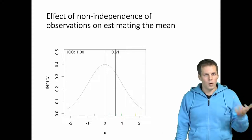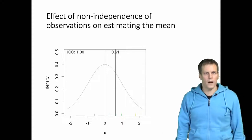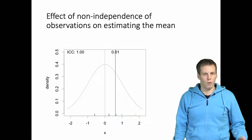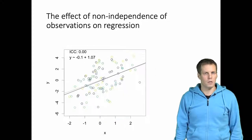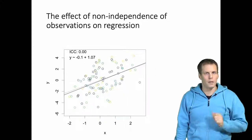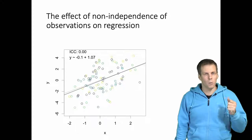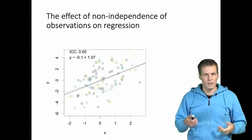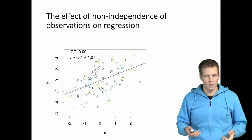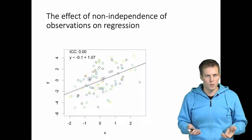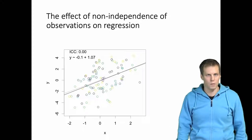So that's the one-variable case. What if we have two variables and we want to run a regression analysis? We have X and Y, still with 100 observations nested in five clusters, so we have 20 observations for each cluster.